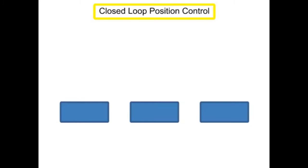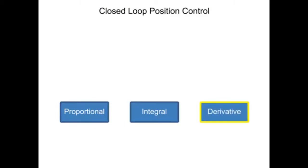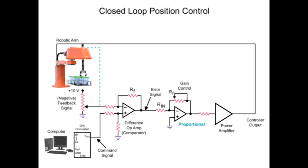A closed loop control system for position control is comprised of proportional, integral, and derivative circuits and is often referred to as a PID. The operation of PID mode control is demonstrated in the following robot arm position circuit. To move the robotic arm to a specific position, a command signal from the computer starts the motion sequence.